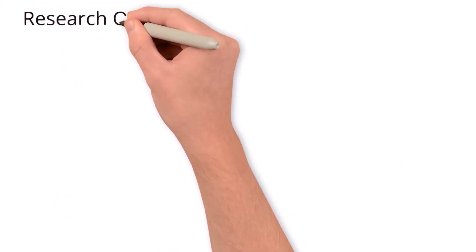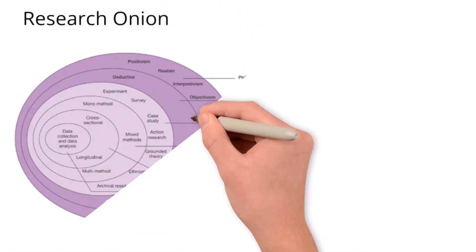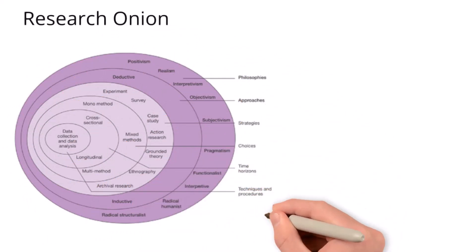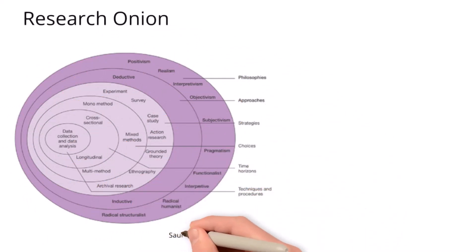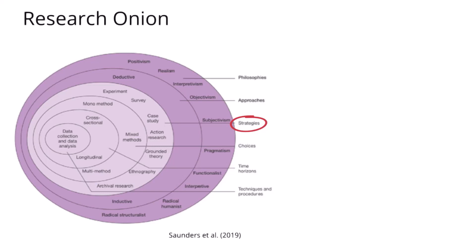Many of you will already be familiar with Saunders' Research Onion, a figure which is becoming increasingly seminal, particularly within the business research methods literature. In Saunders' Research Onion, what I am terming research designs is called strategy. Starting on the outside of the research onion, we have philosophies and approaches, which are your more methodological decisions, and then what Saunders terms strategies — and I'm calling research design in these videos — is the third layer in.